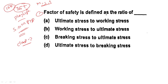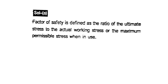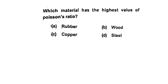Today's first question: Factor of safety is defined as the ratio of ultimate stress to working stress. Remember this — it is a repeated question. Factor of safety is defined as ultimate stress to working stress.